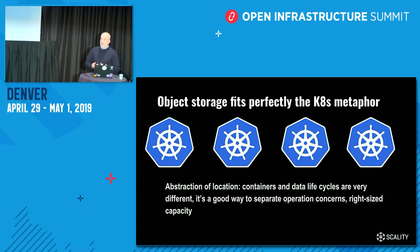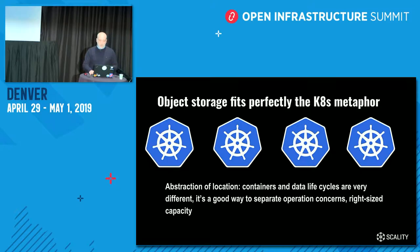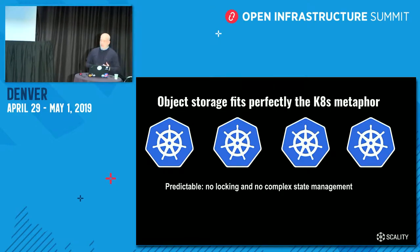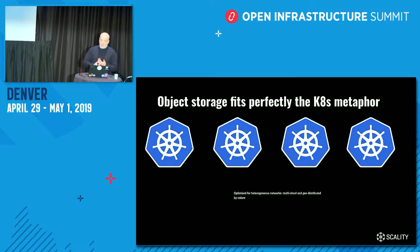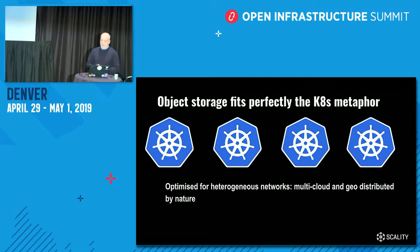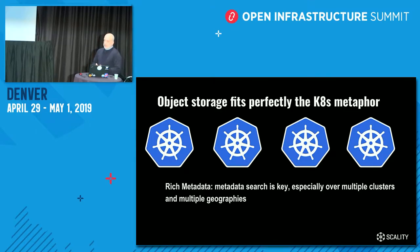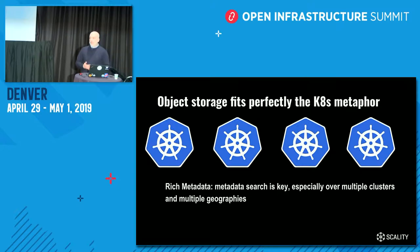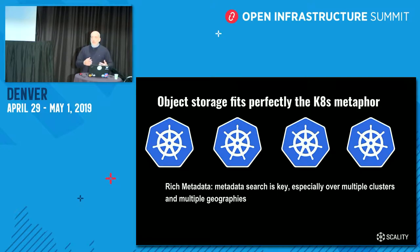The location is abstract — it's just a URL for your data. It's a good way to separate operational concerns. You don't have to worry about capacity planning, manage locking or state management. It's super-optimized for heterogeneous networks, and it's multi-cloud and geo-distributed by nature. Objects carry metadata that allow you to find them wherever they are. The question is whether we're talking enough about object storage in the cloud-native world, or leaving a large piece of the picture by focusing on block and file.